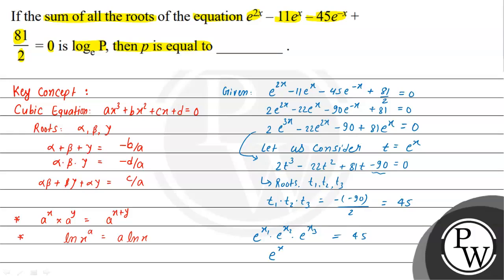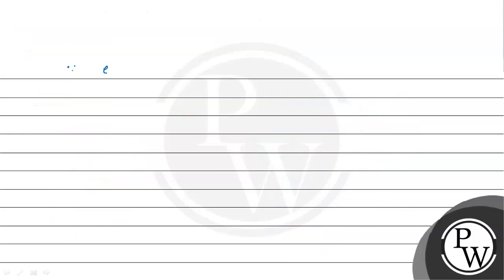Using the exponent property, e^(x₁ + x₂ + x₃) = 45. Now take the natural log of both sides: ln(e^(x₁ + x₂ + x₃)) = ln(45). Using log properties, x₁ + x₂ + x₃ = log base e of 45. This is the sum of roots.